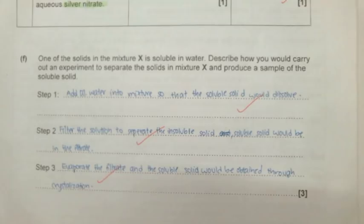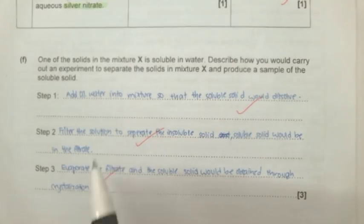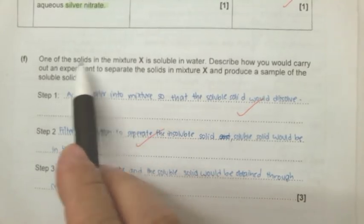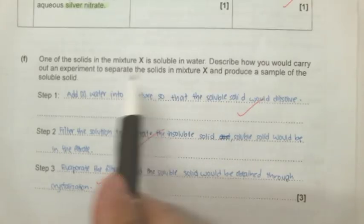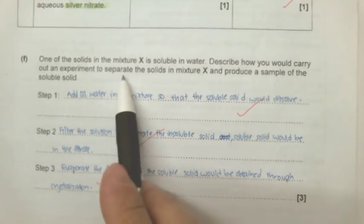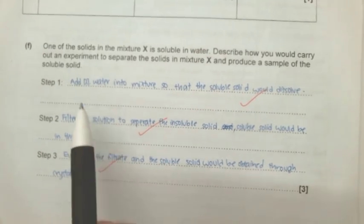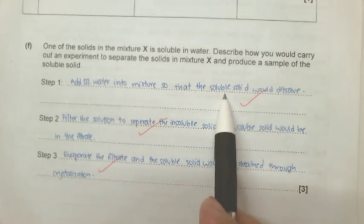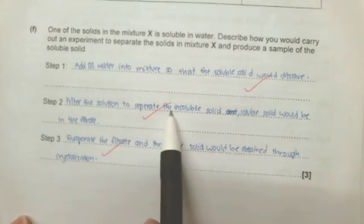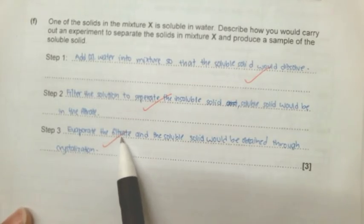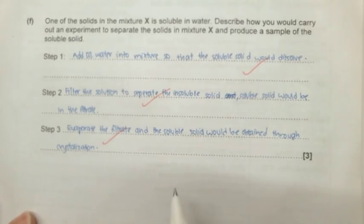The last part of the experiment is to test whether you know what you have done in E. So, if you think carefully, it is exactly what you have done in E. You have a mixture containing two solids. One of them is soluble. The other one is not soluble. Alright. So, you add the water to the mixture so that the soluble solid will dissolve. You filter the solution to separate the insoluble solid. Now, the soluble solid will be dissolved in a filtrate. You evaporate the filtrate so that the soluble solid will be obtained through crystallization.